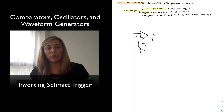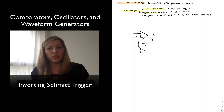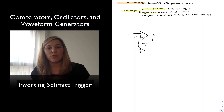We have talked about open-loop comparators in previous videos, and in this video we are going to talk about comparators that use positive feedback, also known as Schmitt triggers. The advantages of Schmitt triggers over open-loop comparators is that they can use that positive feedback mechanism to operate faster, to provide faster transitions.